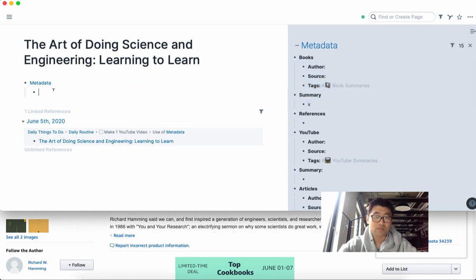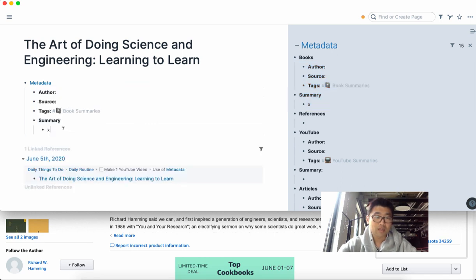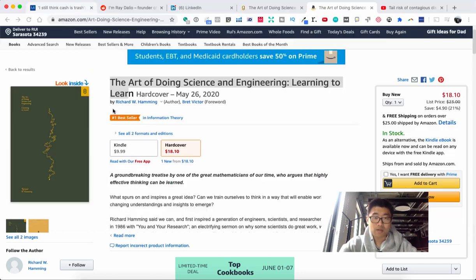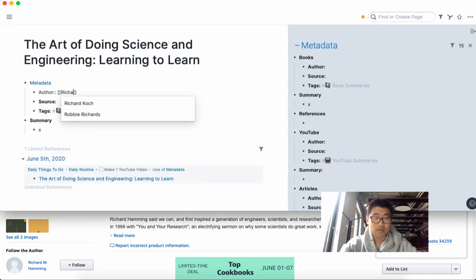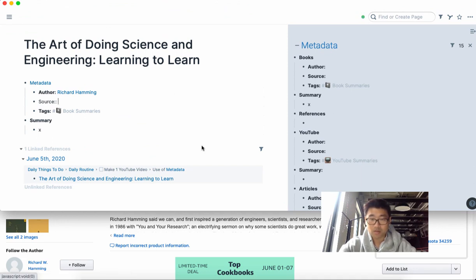the one that is most relevant to it. In this case, this book is written by Richard Hamming, and the source of the book in this case is Amazon, but you can